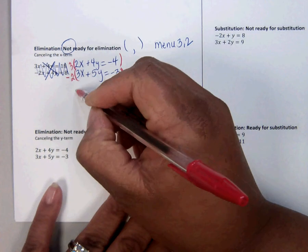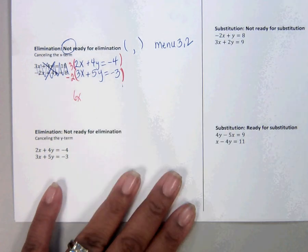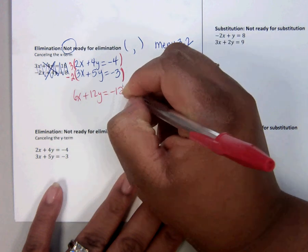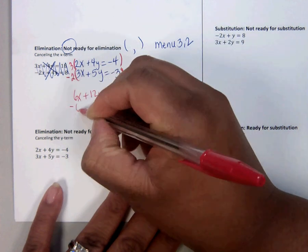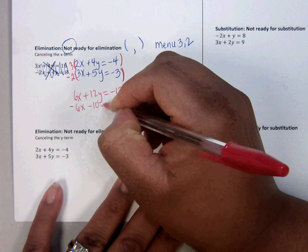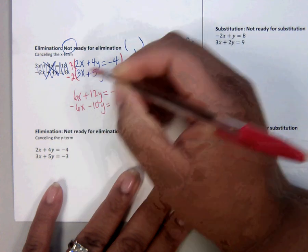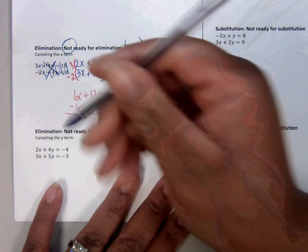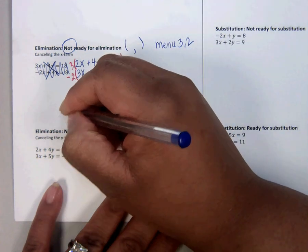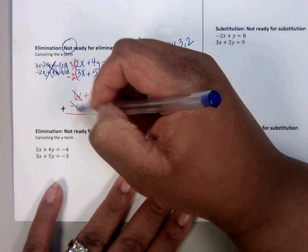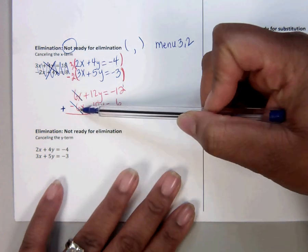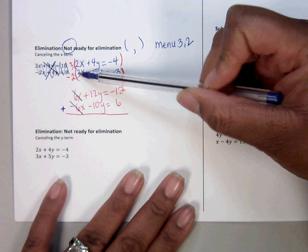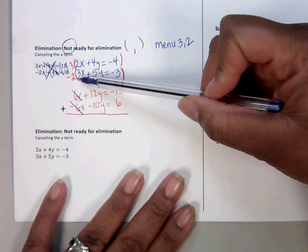So that gives me 6x plus 12y equals negative 12. That gives me minus 6x minus 10y equals 6. Now I am ready for adding. So this cancels just like we wanted it to. Now you have to be careful because if you make this 6 and this 6 and then you cancel, which means it adds to 12, that's not accurate.